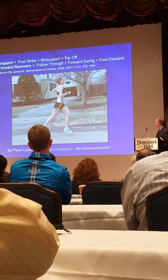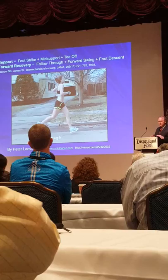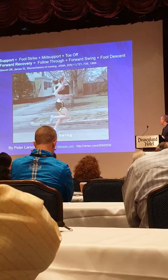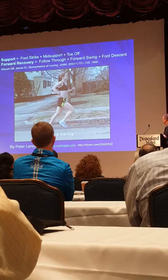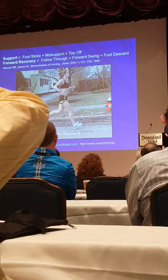Here's what we call the double float phase. In running, both feet are off the ground. This doesn't occur with walking. We have follow through, forward swing, and then at the end of forward swing we go into the foot descent phase where the foot's going toward the ground, ending at the heel contact phase.